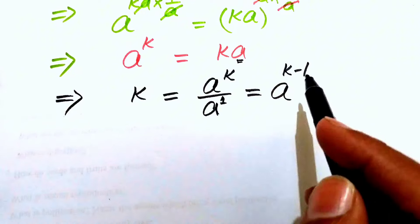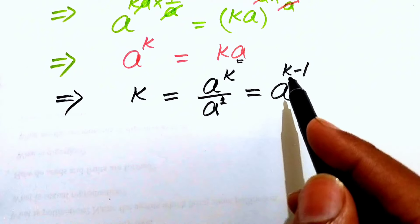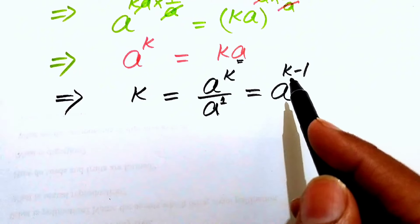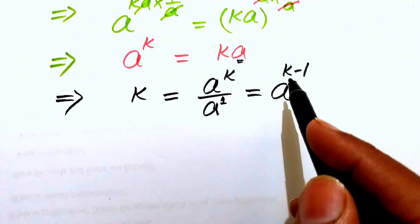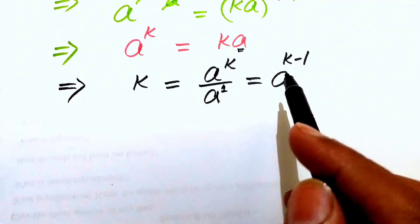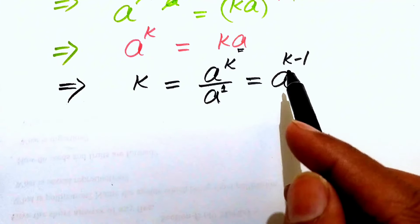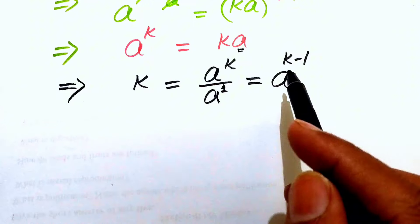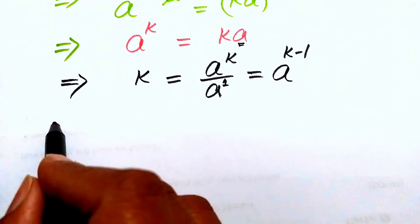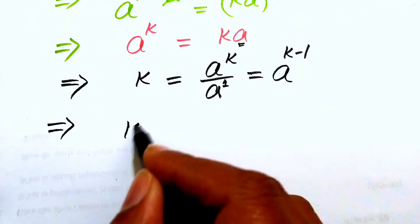Now in order to find the value of a, we remove the exponent k minus one. Since k is a constant, we can take the (k minus one)-th root on both sides.